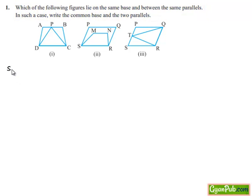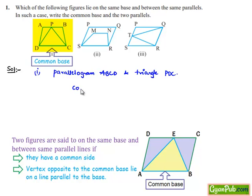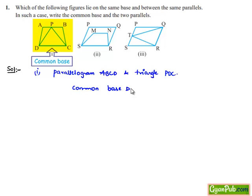Now, moving on to solution. Consider the first part. Here, we have two figures: parallelogram ABCD and triangle PDC. These both, parallelogram ABCD and triangle PDC, lie on the common base DC and they lie between two parallels AB and CD.